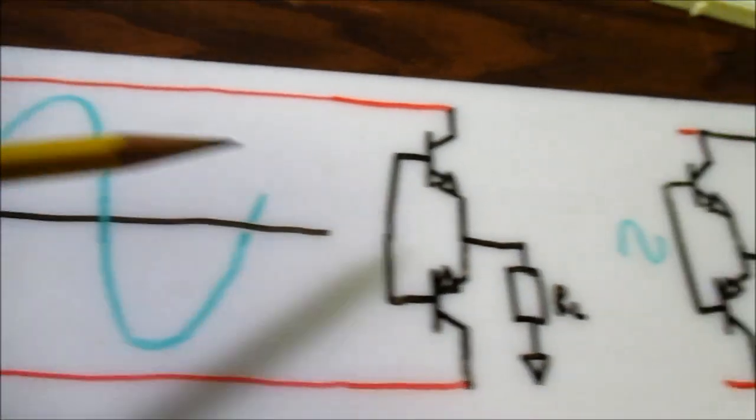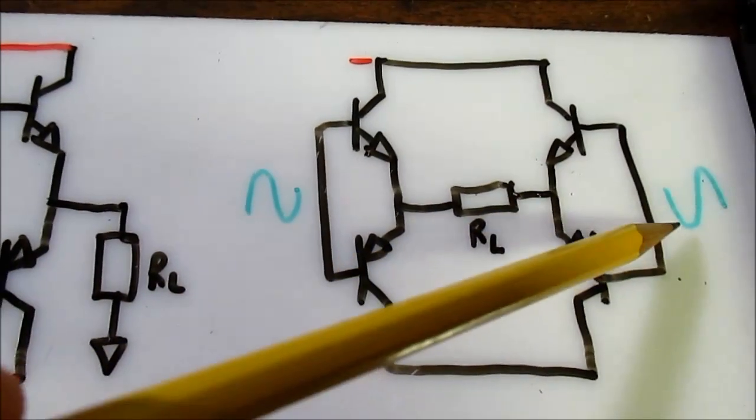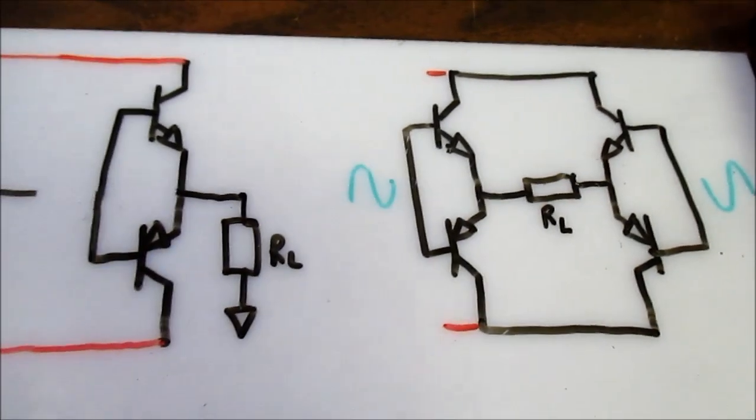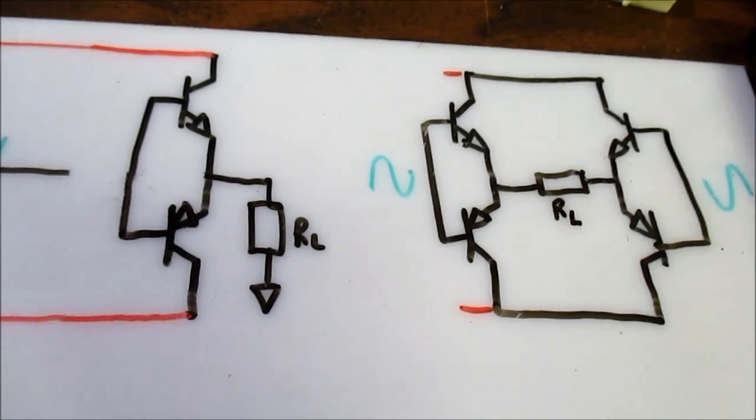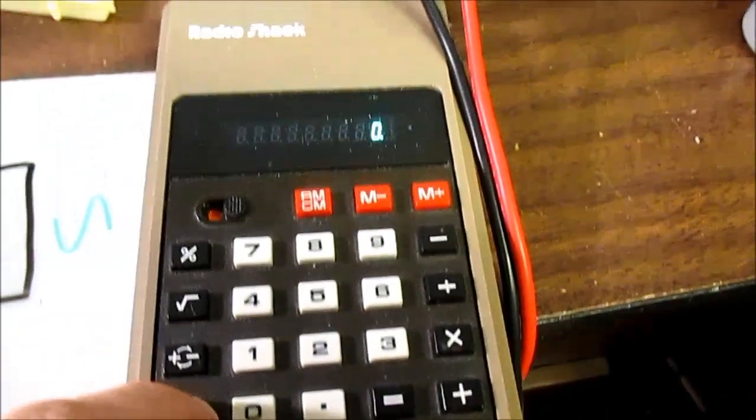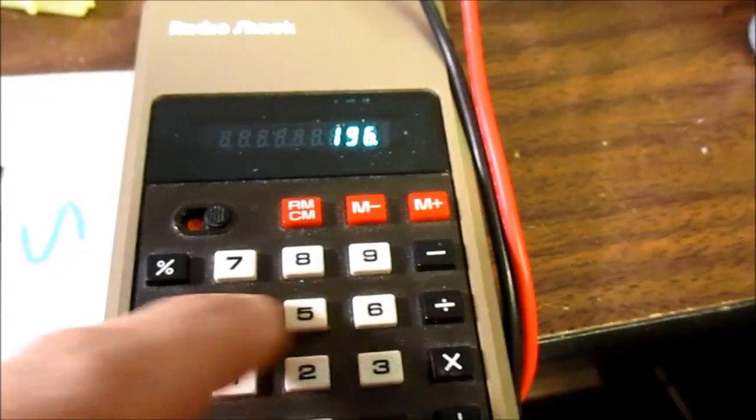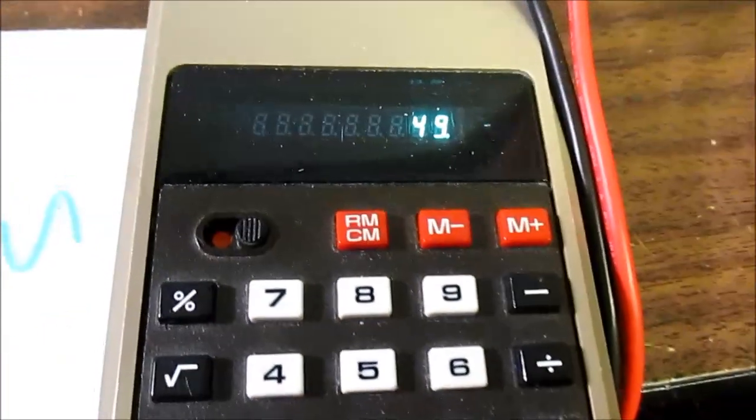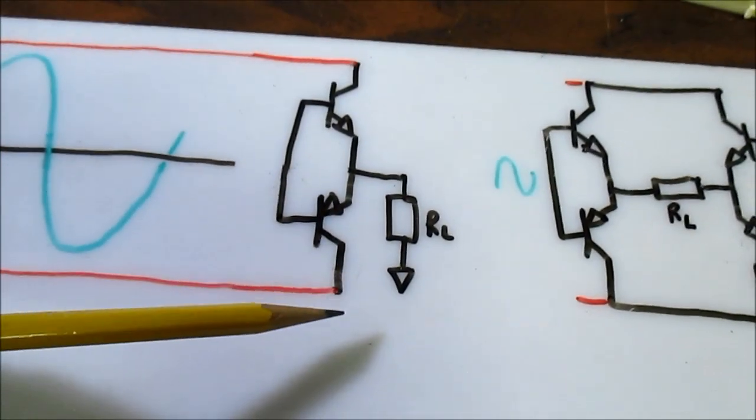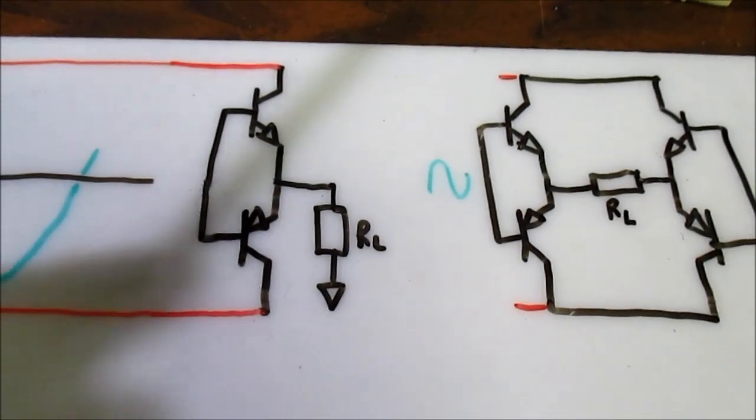So when this amplifier here hits 10 volts peak, this side is negative 10 volts. That means there's 20 volts across that. And in RMS, that would be 14 volts. So 14 volts RMS, square that, divided by our 4 ohms again, and we have 49 watts. And if you do the math, 12.25 times 4 is 49. We have quadrupled our output.